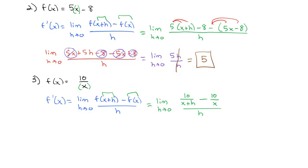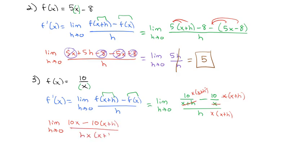We've seen fractions inside of fractions before. We multiply by the common denominator x times (x plus h) on both the top and the bottom, then distribute through the numerator. After reducing, we get the limit as h goes to 0 of 10x minus 10 times (x plus h), all over hx(x plus h). Distributing the 10 gives us 10x minus 10x minus 10h, all over hx(x plus h).